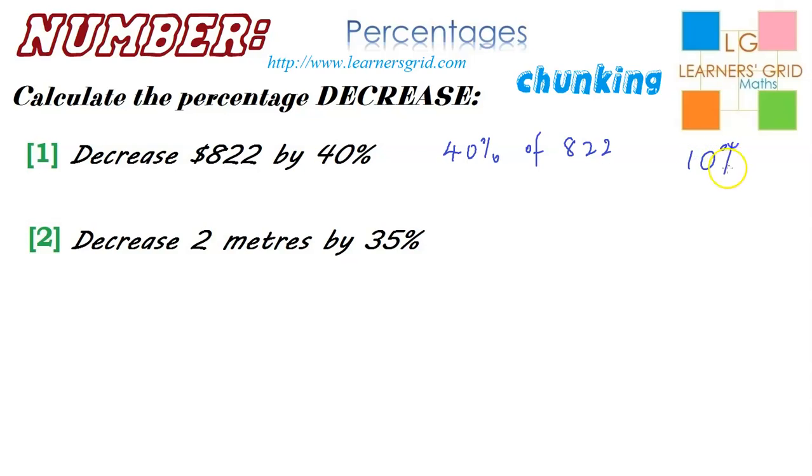The 40% can be broken down into 10%. Let's find 10%. It should be pretty easy. 10% is basically 822 divided by 10. Decimal point is here. We're going to divide, so it's going to go that way. How many jumps will the decimal point make? Well, that's determined by how many zeros there are in the denominator, and there is one zero, so that's going to jump to here. So, 10% is 82.2.